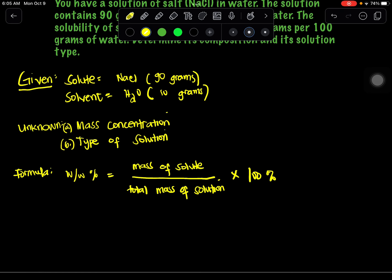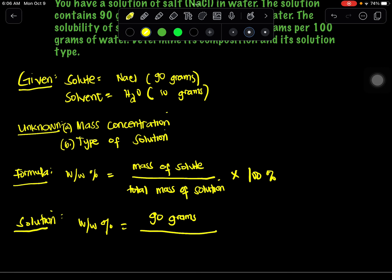For our solution, using the given-unknown-formula approach, we will substitute the given values into our formula. So the percentage composition is equal to the mass of solute, which is 90 grams of salt, divided by the total mass of solution, which is 90 grams plus 10 grams, multiplied by 100 percent.